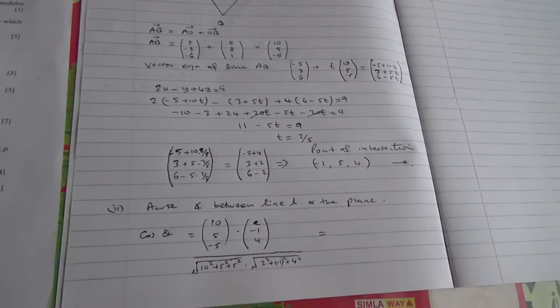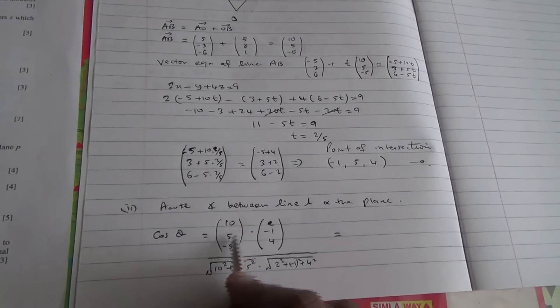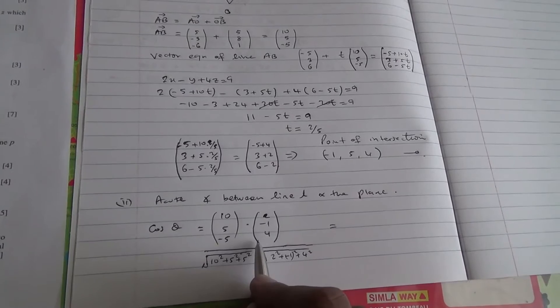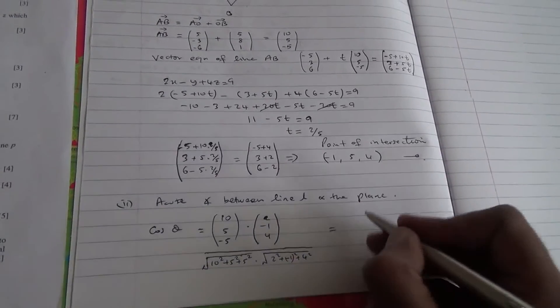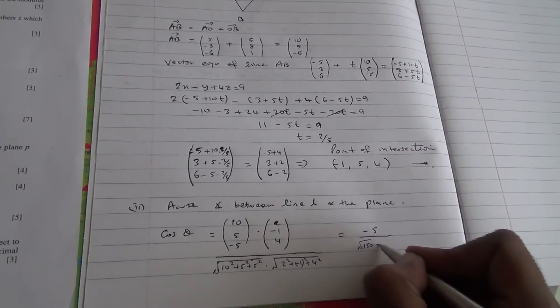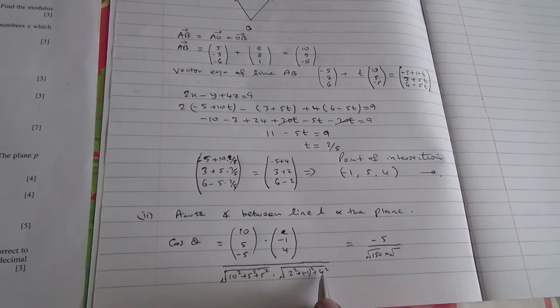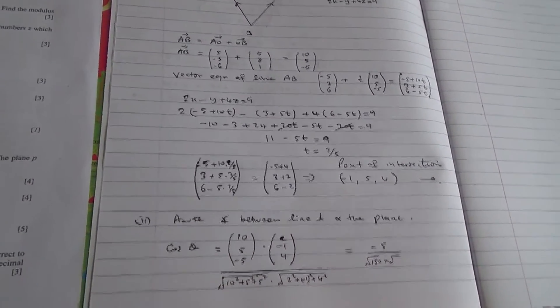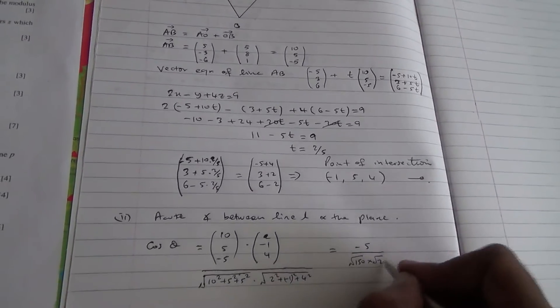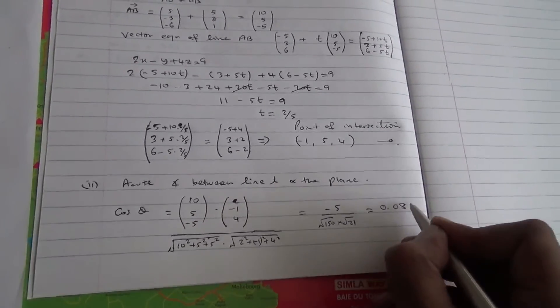And all of that's going to, if you work this out in your calculator, but before you work it out, you should be able to know how to do this one. 10 times 2 is 20, 5 times -1 is -5, -5 times 4 is -20, 20 - 20 is 0, -5 times 1 is -5, divided by √150 times √21, and that's going to give you 0.0891.